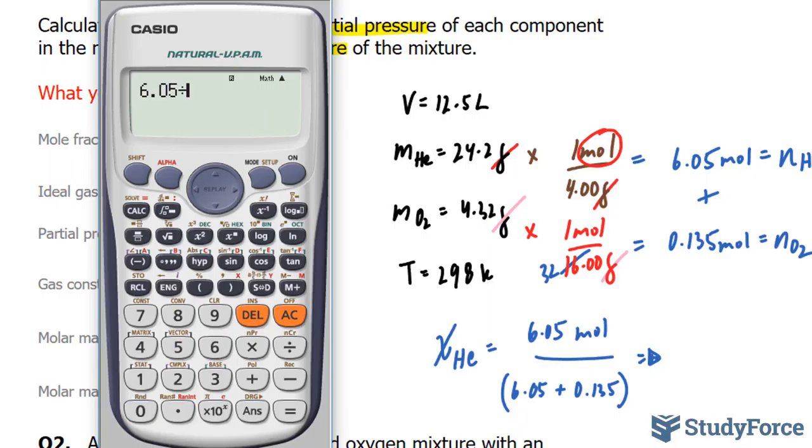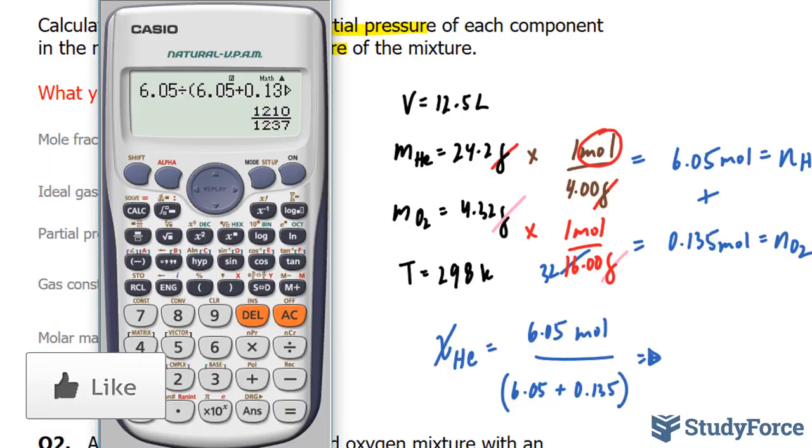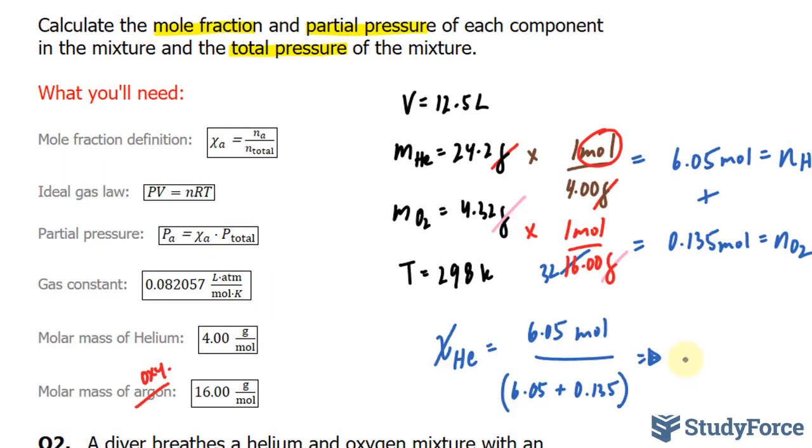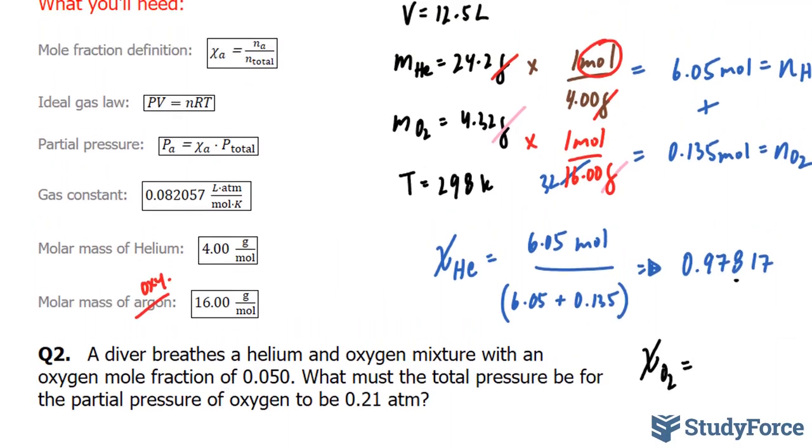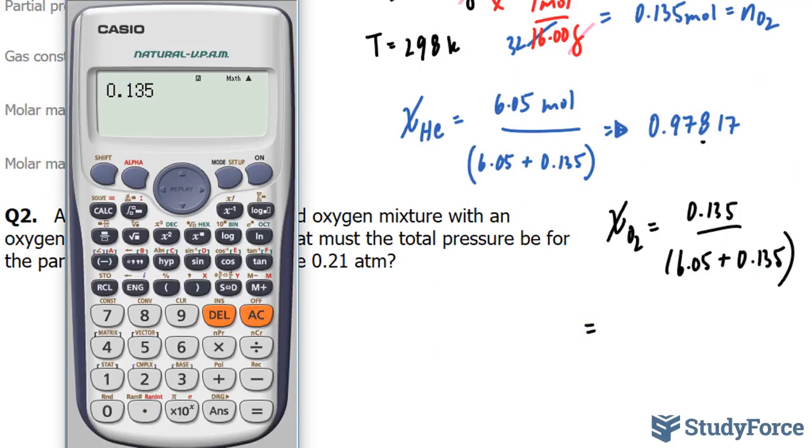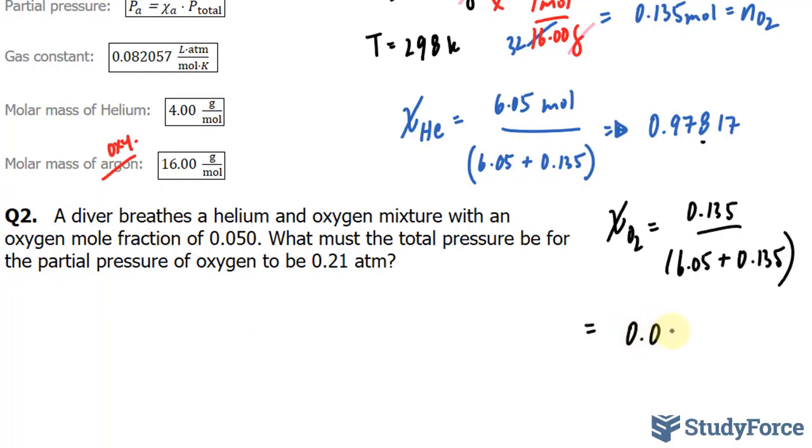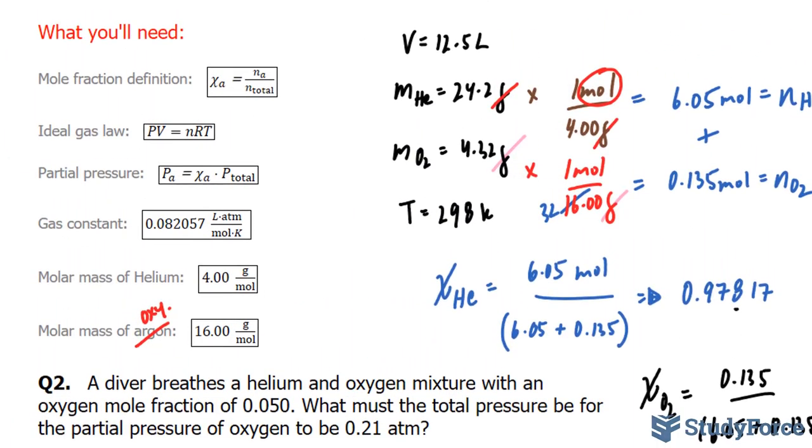This will be represented as N_He and N_O₂. So we found the number of moles, and as I mentioned at the very beginning, using these numbers I can find the mole fraction. So let's find chi of the first gas, which was helium. What I'll do is I'll take this number, 6.05 moles, and divide it by the total. So I'll add these two up: 6.05 plus 0.135. This gives me, using my calculator, 6.05 divided by 6.05 plus 0.135. I end up with 0.978, 0.97817. Our numbers should only have three significant figures. So I'll just put a dot underneath, but I'll keep the one and the seven to prevent any sort of rounding errors.